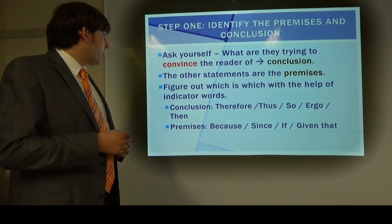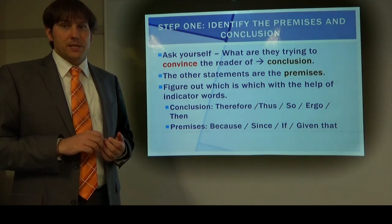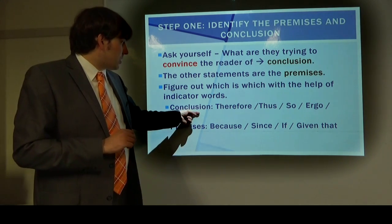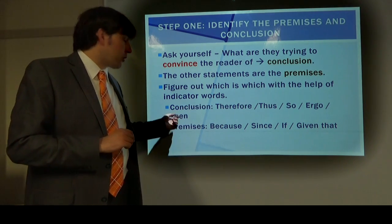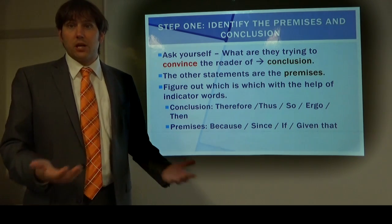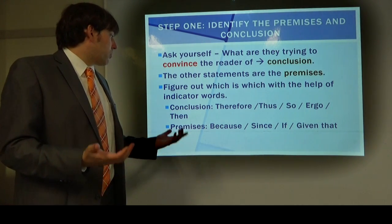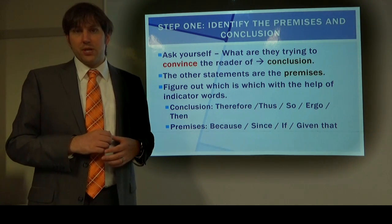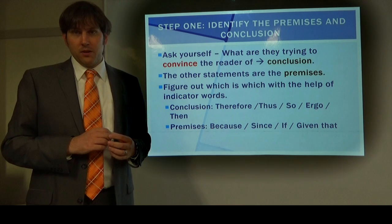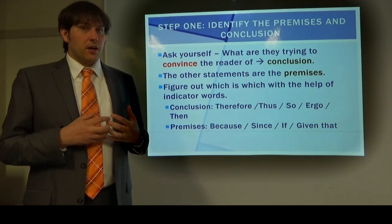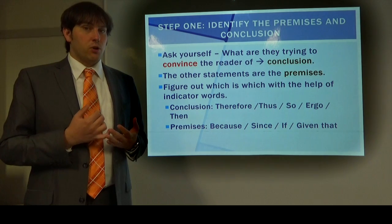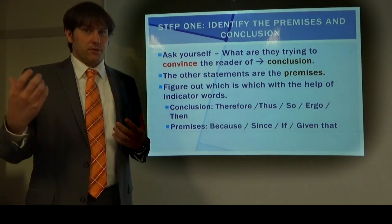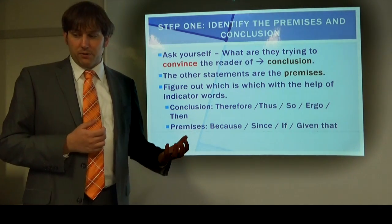We need to figure out which are which, and one thing that can really help is indicator words. Indicator words such as 'therefore,' 'thus,' 'so,' 'ergo,' and 'and then' will tell us a conclusion is coming. Whereas words like 'because,' 'since,' 'if,' and 'given that' can tell us a premise is coming. For example: 'Because I like ice cream, I like Hokkaido soft serve.' Here the conclusion is 'I like Hokkaido soft serve,' and the premise is 'because I like ice cream.'